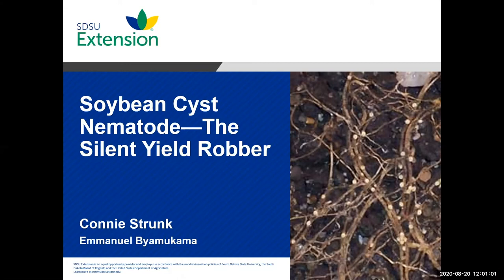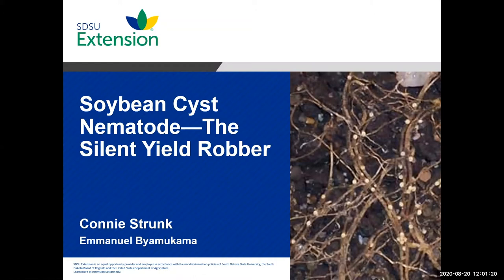Today I'm going to talk about soybean cyst nematode, often called the silent yield robber. The reason we call it that is due to the declining yields that occur due to SCN damage. SCN alone can cause 1.5 billion dollars in damage and yield loss here in the United States. Not only does it cause declining yields, but it robs nutrients from plants, causes stunting and dwarfing of plant roots.